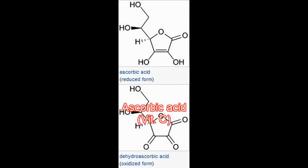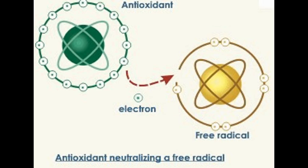Ascorbic acid, called vitamin C, is one of the most effective antioxidants that regulate free radicals like firemen regulate fires. It is an essential nutrient that humans require but cannot produce themselves.